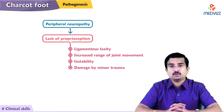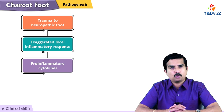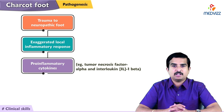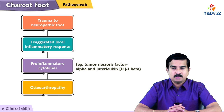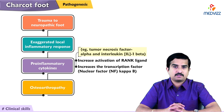Trauma to the neuropathic foot may trigger an exaggerated inflammatory response mediated by the release of pro-inflammatory cytokines such as tumor necrosis factor alpha and interleukin-1-beta, resulting in osteoarthropathy. These two important cytokines increase activation of RANK ligand, which in turn increases the transcription factor nuclear factor kappa B.